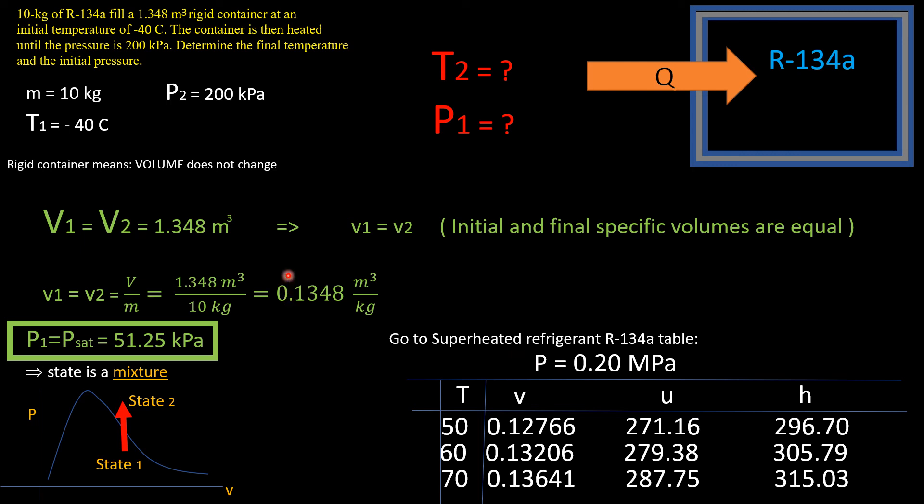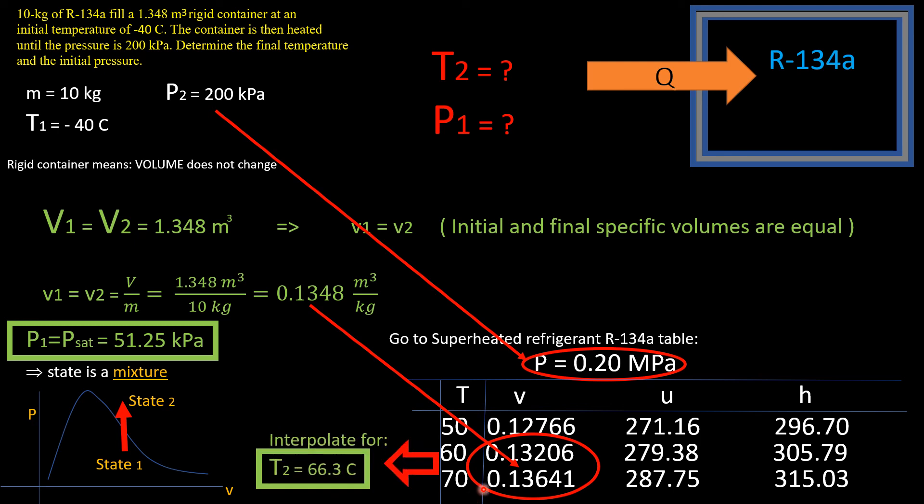We know the pressure and we also know the specific volume, so take this 0.1348 and scroll through these values to see if you can find it falling somewhere in a range. We see that this falls between these two values. This tells us that yes, it is superheated, and the temperature will fall somewhere between 60 and 70 degrees Celsius. To be more precise, we can interpolate for T2 being equal to 66.3 degrees Celsius.